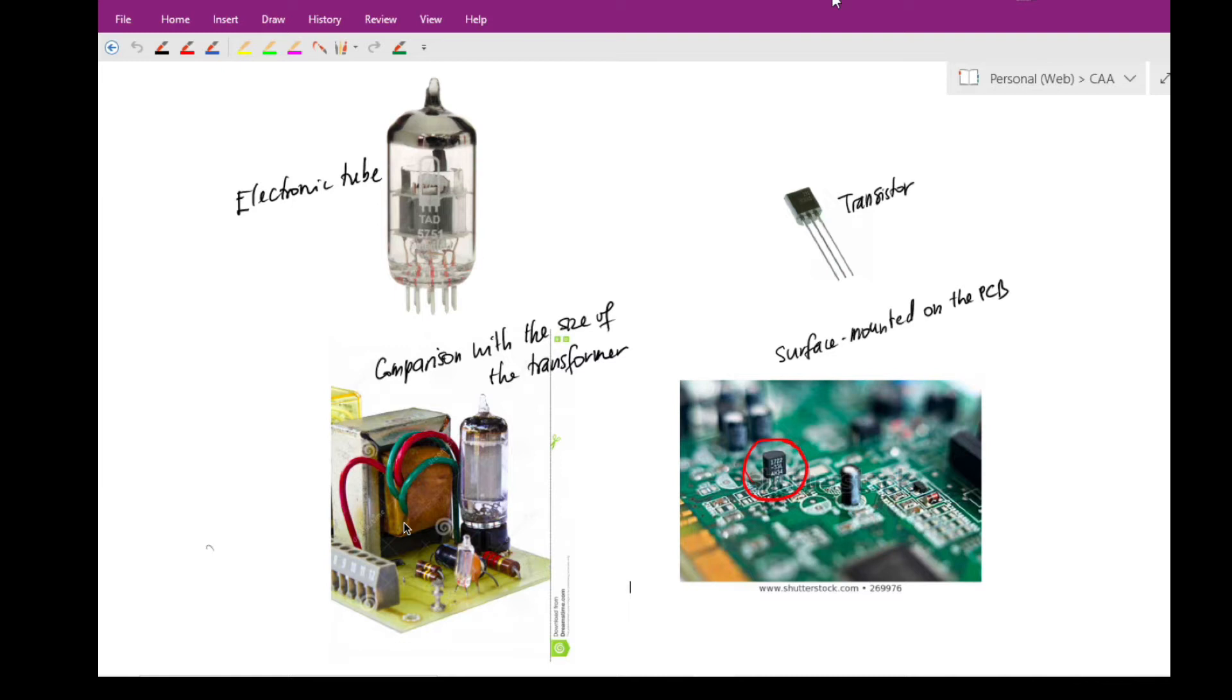On the left is the vacuum tube, and the size of the tube in comparison with other components on the board—in this case, the transformers—you can see that the size of the tube is comparable to the transformer, which is very large. On the right is the tiny transistor in comparison to the electronic tube, and the illustration of the practical size of the transistor mounting on the surface of the board.